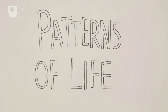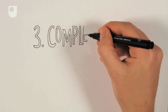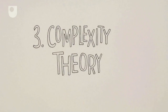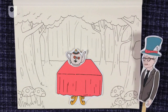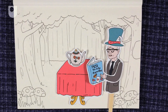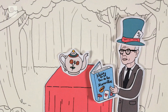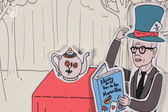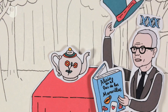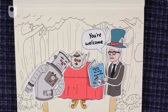Patterns of Life Number 3. Complexity Theory. Probability ace Warren Weaver loved Alice in Wonderland, and when he wasn't working on his system to judge the book's very best translation, he was causing quite a stir in the fields of molecular biology and artificial intelligence.